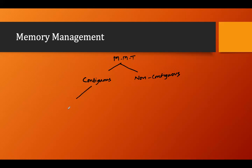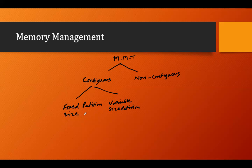The first partition is called fixed partition, and the other is called variable size partition. Fixed size partition is also called static partition, and variable size partition is also called dynamic partition.